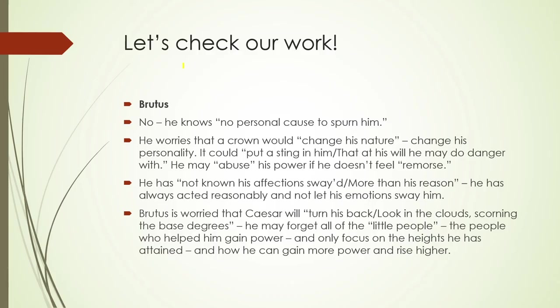Let's check our work. He knows no personal cause to spurn him. He worries that a crown would change his nature, his personality. It could put a sting in him that at his will he may do danger with — he may abuse his power if he doesn't feel remorse. He has not known his affection to sway more than his reasons — he has always acted reasonably. But Brutus is worried that Caesar will turn his back, look in the clouds, scorning the base degrees — he may forget all of the little people who helped him gain power, and only focus on how he can gain more power and rise higher.